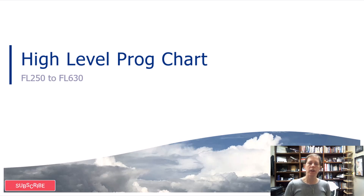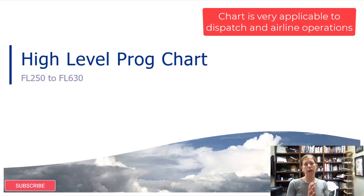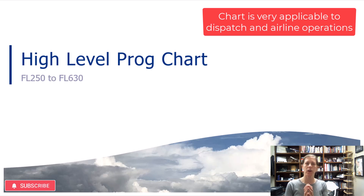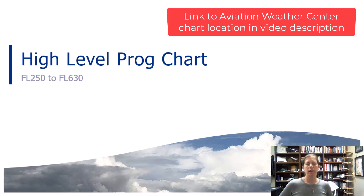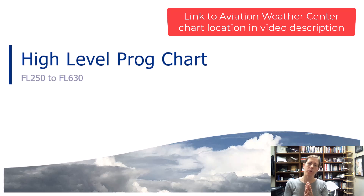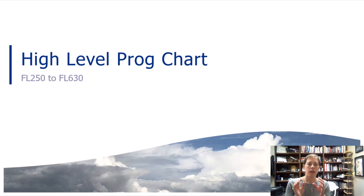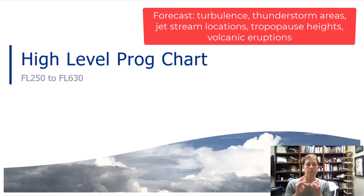The high-level PROG chart covers altitudes of flight level 250 to flight level 630, so higher altitude type operations. What it is good for is finding areas of turbulence, thunderstorm activity, and tropopause heights.